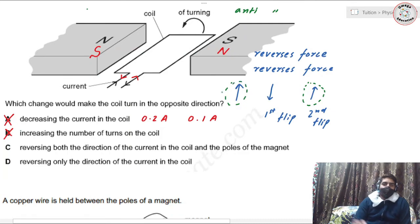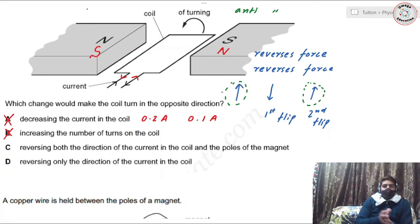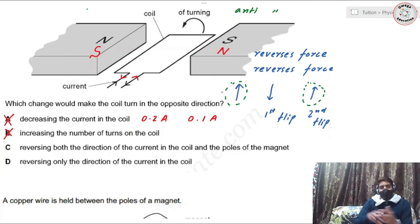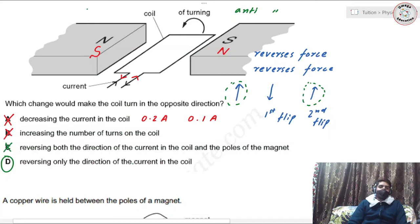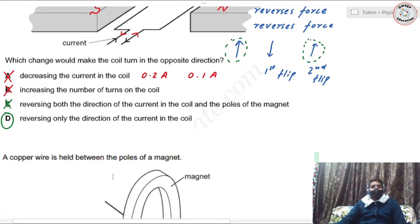If you change both the direction of current and the direction of poles simultaneously, the direction of rotation stays the same. Therefore D is the right answer — reversing only the direction of current, or equivalently only reversing the magnetic poles, is what changes the direction of rotation.